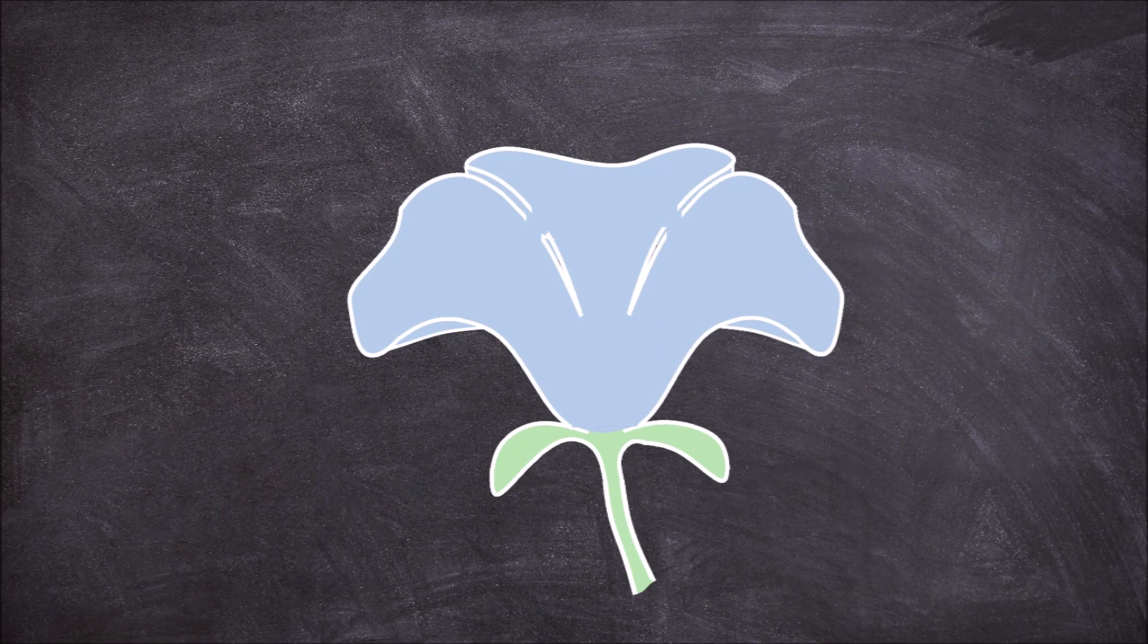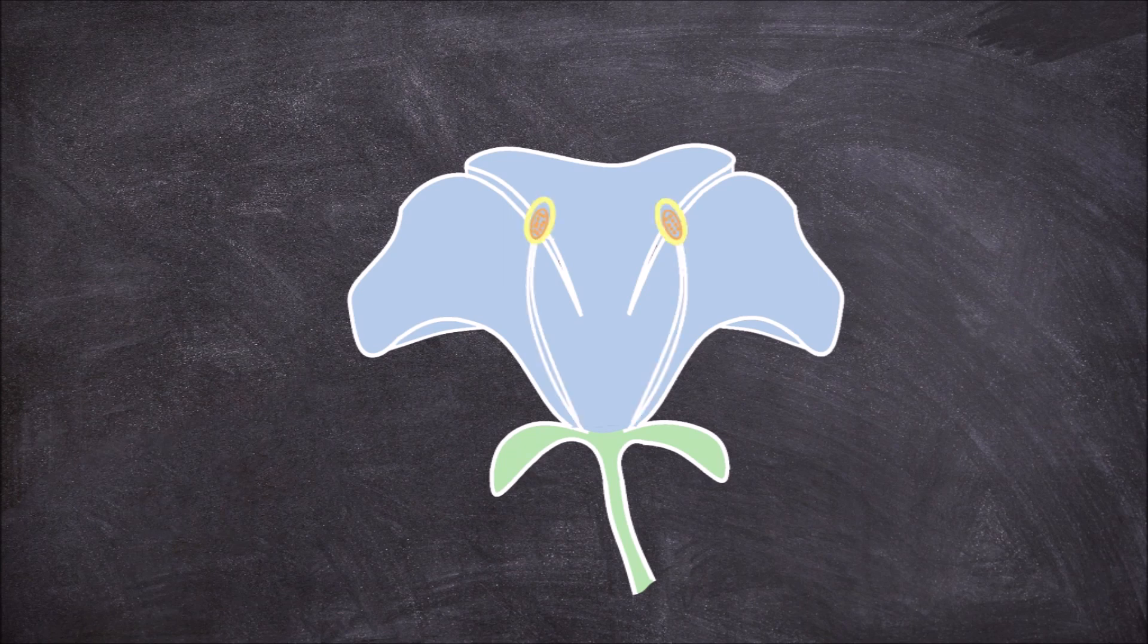The third whorl to develop is the one that contains the male reproductive organs. This is the stamen whorl and is called the androecium.